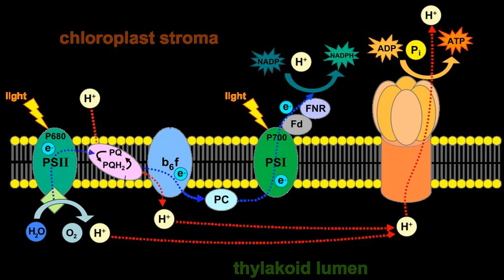PSI accepts electrons from plastocyanin and transfers them either to NADPH or back to cytochrome B6F. PSI, like PSII, is a complex, highly organized transmembrane structure that contains antenna chlorophylls, a reaction center P700, phylloquinone, and a number of iron-sulfur proteins that serve as intermediate redox carriers.